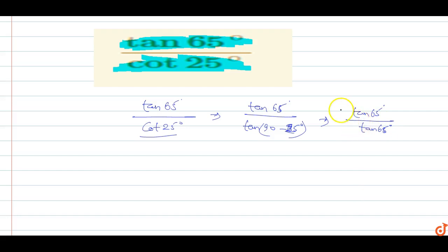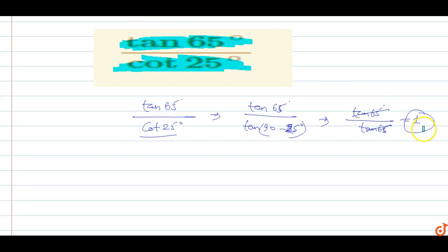So this equals 1. Therefore, the value of cot(1065°) upon cot(25°) is equal to 1. This is the answer for this question.